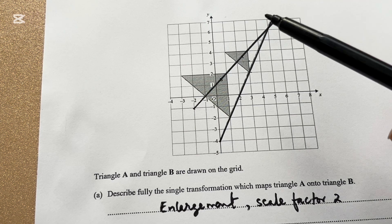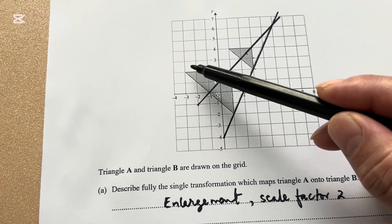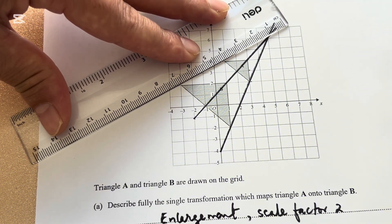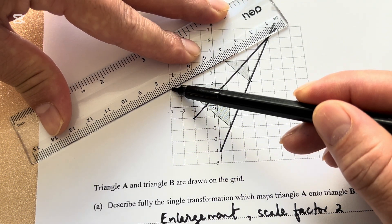Again, you need to draw a line from the third corresponding vertices. Here we go.